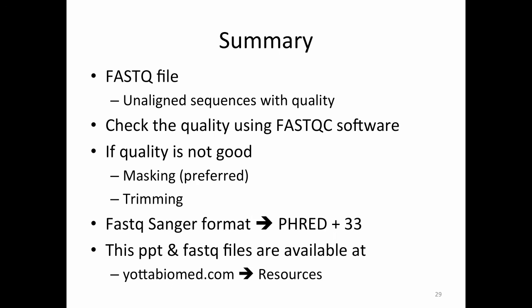In summary: the FASTQ file is what you get from the sequencer, and it contains unaligned sequences with corresponding quality. To check the quality, we use the FastQC software. If the quality is not good, I strongly suggest using masking, but trimming is widely acceptable too. The FASTQ Sanger format is basically the Phred score with a 33 offset added. This PowerPoint slide and FASTQ files are also available at yodabiomed.com — go to resources.